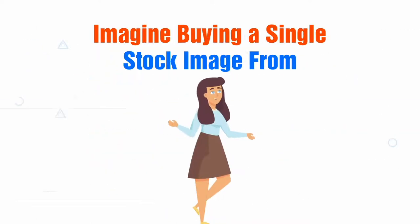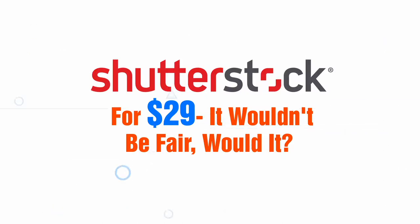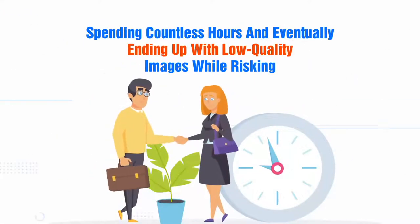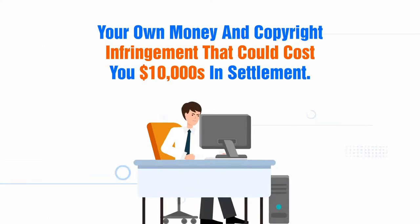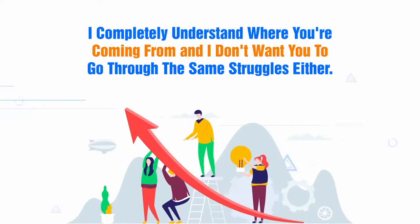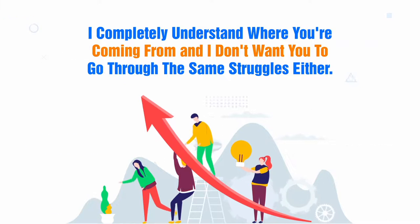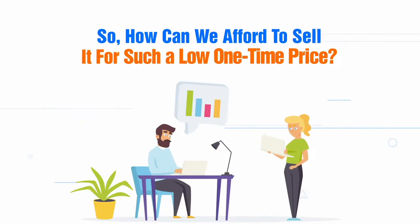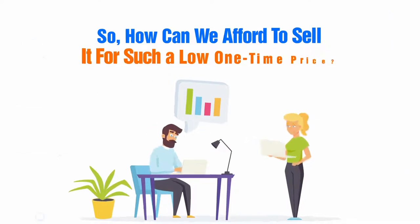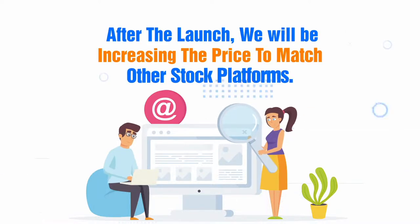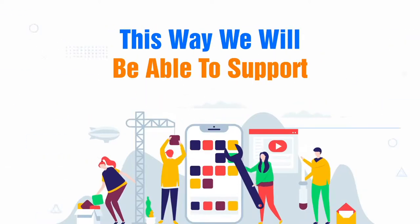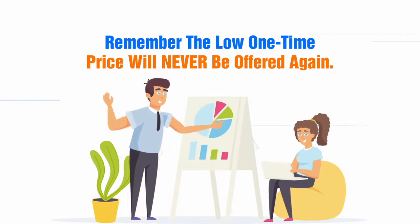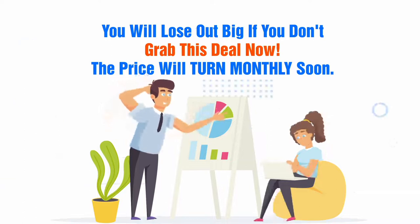So what's the price? Imagine buying a single stock image from Shutterstock for $29 — it wouldn't be fair, would it? Or paying monthly fees of $49 a month for overpriced stock resources. Spending countless hours and ending up with low-quality images while risking copyright infringement that could cost tens of thousands of dollars in settlement — I don't want you to go through that. That's why we made our prices as affordable as possible. Today you get access to Propelstock for a low one-time price. This is a limited-time offer — after the launch, we'll be increasing the price. Remember, the low one-time price will never be offered again.